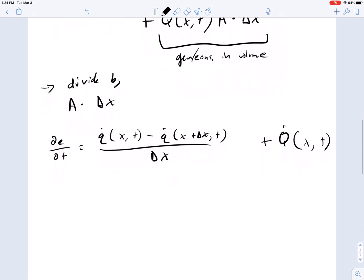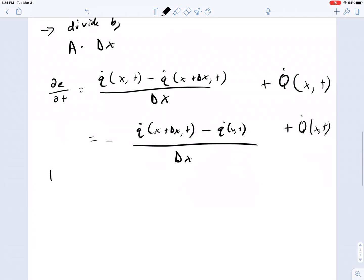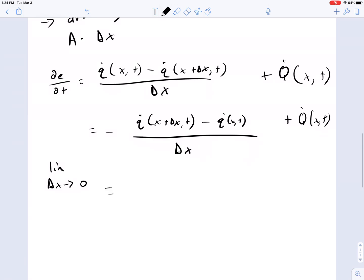Now simply rearranging this, we know that this is equal to minus q dot at x plus delta x comma t minus q dot at x comma t plus q dot x comma t, all divided by delta x. Take the limit. Delta x goes to zero. Take it to the limit.